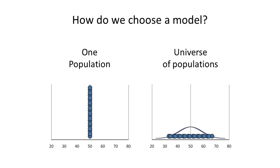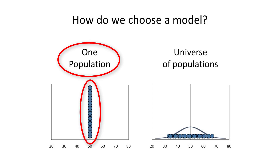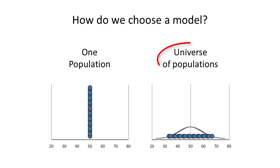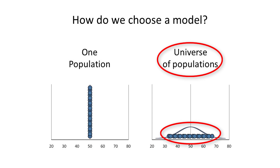How do we choose one model or the other? Think about the meaning of the word 'model.' The model provides a context — a blueprint — for making sense of the numbers. We need to understand where the numbers come from if we want to understand how to analyze them. In one case, we're working with one population — Thomas Jefferson High School — and all studies estimate the same value: the mean score in that school. So the fixed effect model applies. In the other case, we're working with a universe of different populations — all the high schools in Brooklyn — and we drew a random sample of these schools. So the random effects model applies.